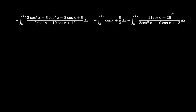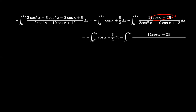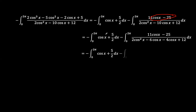Since our interval is 0 to 2π, and cos(x) swings in both the positive and negative direction in equal measure, it's easy to see that the integral of cos(x) over this interval goes to 0. We'll do our due diligence and confirm that it is indeed 0.